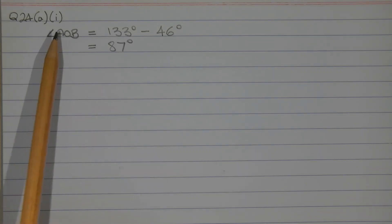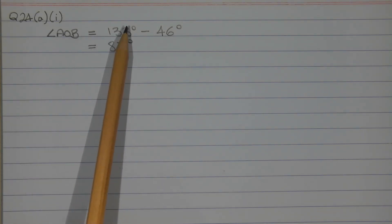And we get angle AOB is equal to 133 degrees minus 46 degrees, which equals 87 degrees.